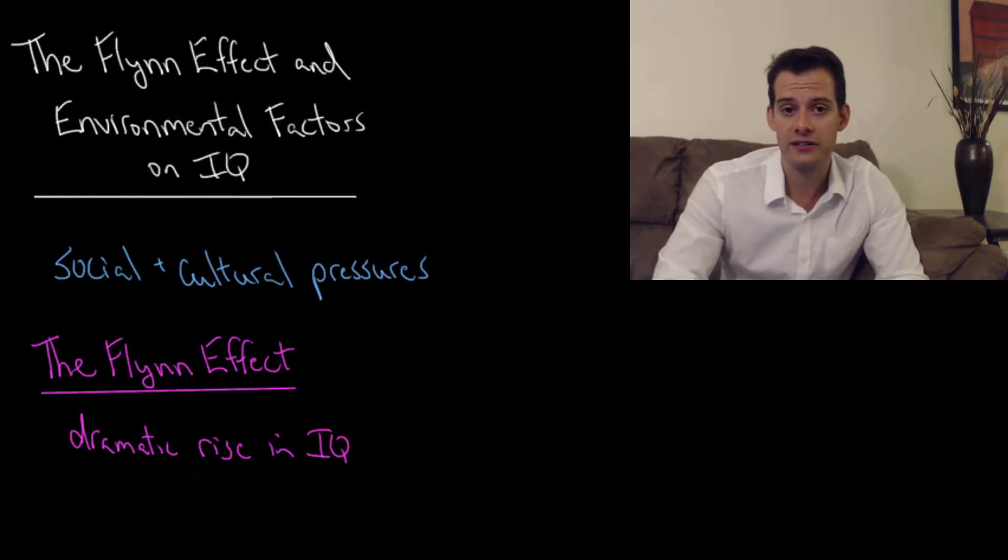For instance, we could look at the fact that Asian students routinely outscore their white American counterparts in math performance. We might consider that this could be genetic, maybe there's some genetic difference between the races that's accounting for this performance gap. But when we consider that Asian students spend an estimated 30% more class and homework time on math, then we might think that maybe environment is playing a role. Maybe there's differing cultural pressures on students and different expectations in terms of their math performance and this is at least partially explaining this difference in performance.